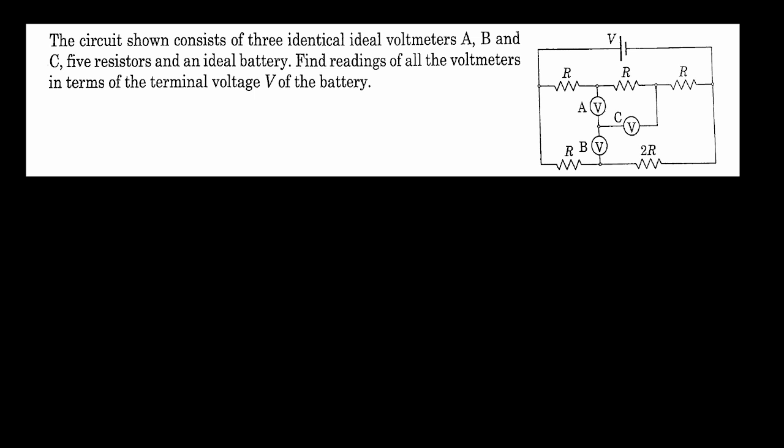The circuit shown consists of three identical ideal voltmeters A, B and C, five resistors and an ideal battery. Find readings of all the voltmeters in terms of the terminal voltage capital V of the battery.